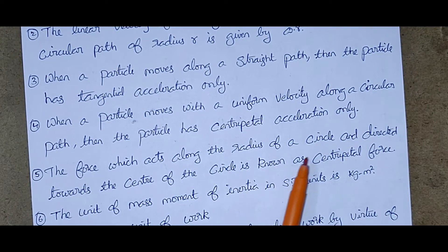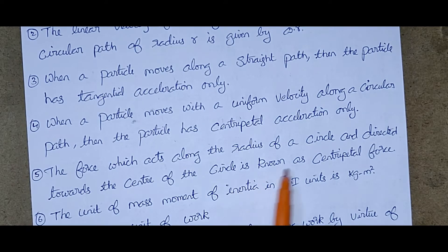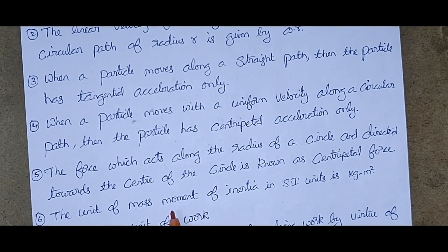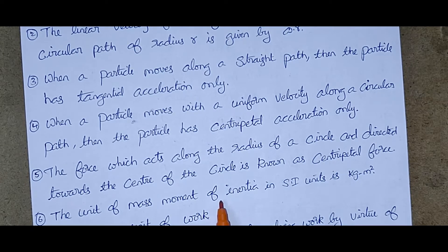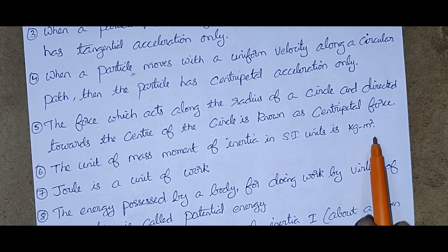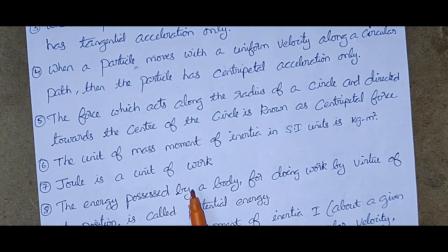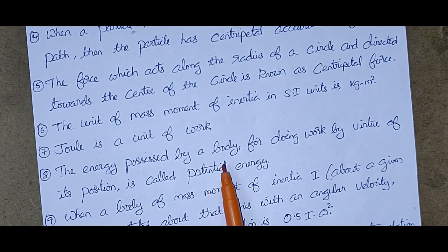Next, the force which acts along the radius of a circle and directed towards the center of the circle is known as the centripetal force. The unit of mass moment of inertia in SI units is kilogram meter square. Joule is a unit of work.